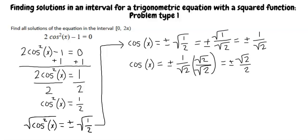Now, we can split this into two equations and then use the unit circle to solve for x. Doing this, we write cosine of x equals plus square root of 2 over 2, or cosine of x equals negative square root 2 over 2.